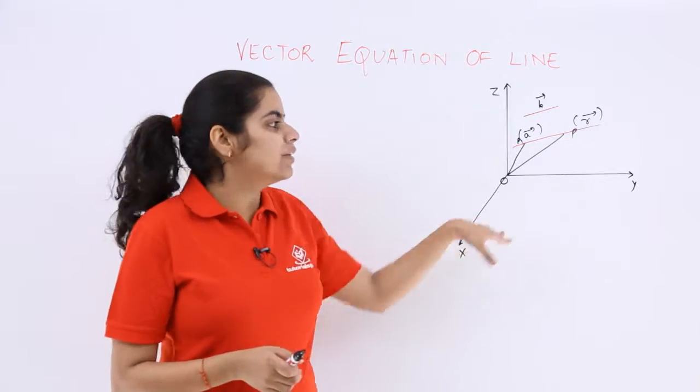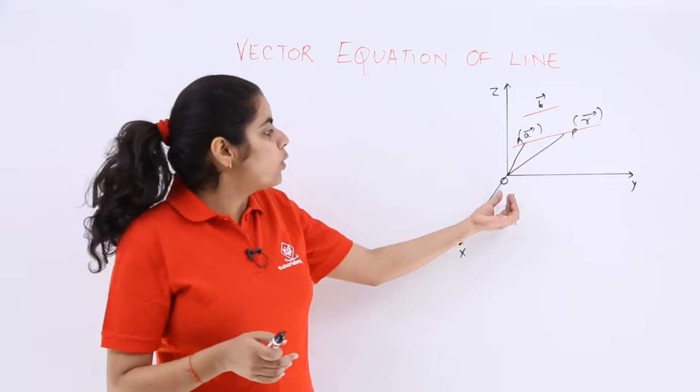Now you have been given a Cartesian plane. x, y, z is the space, o is the origin point.